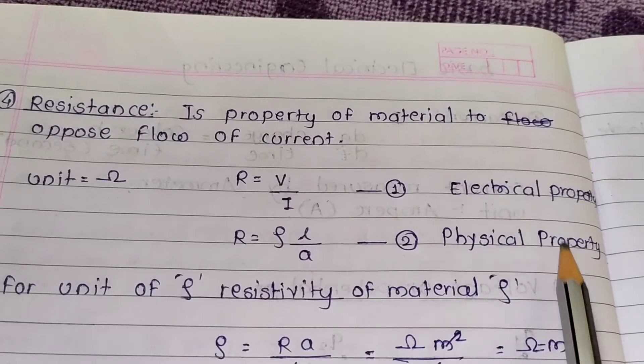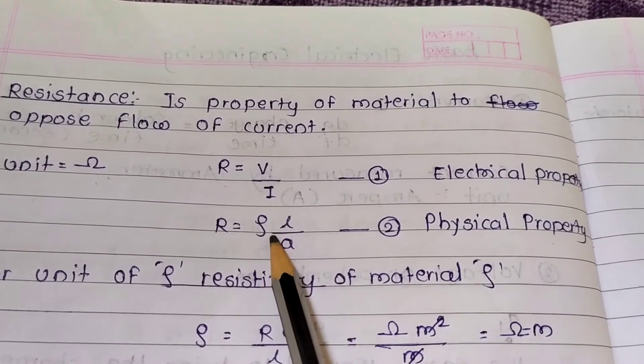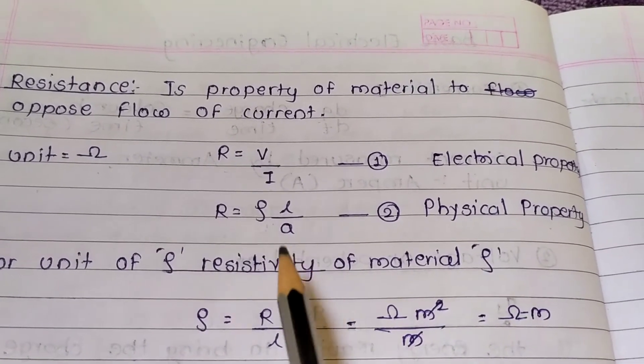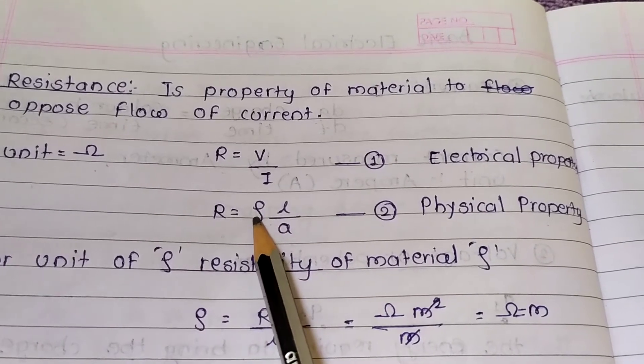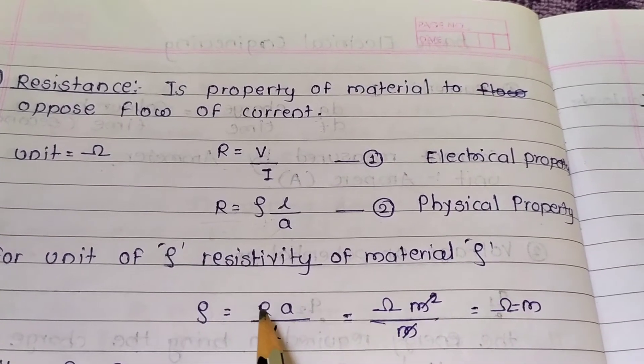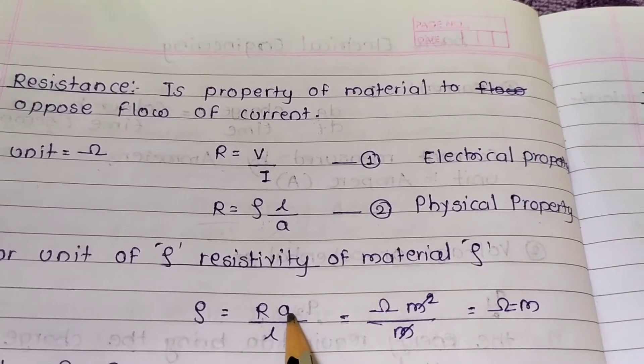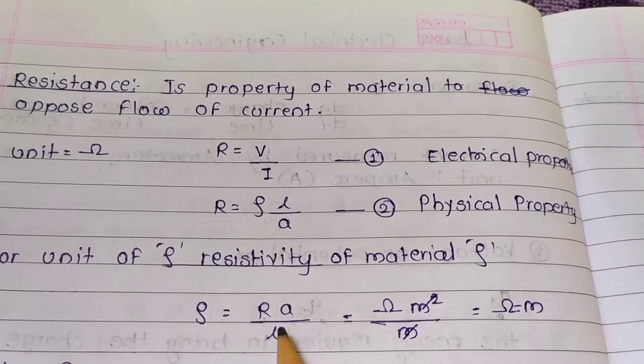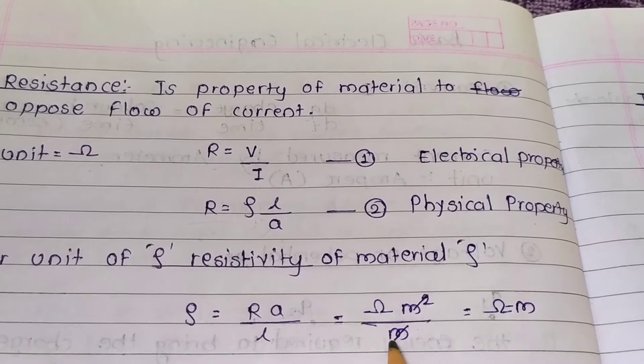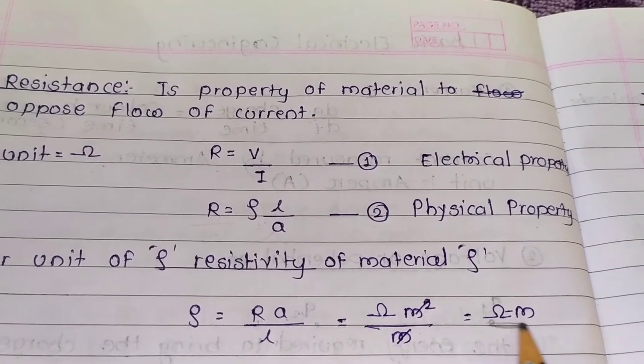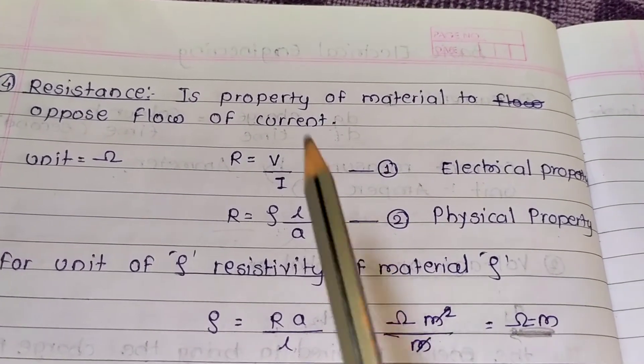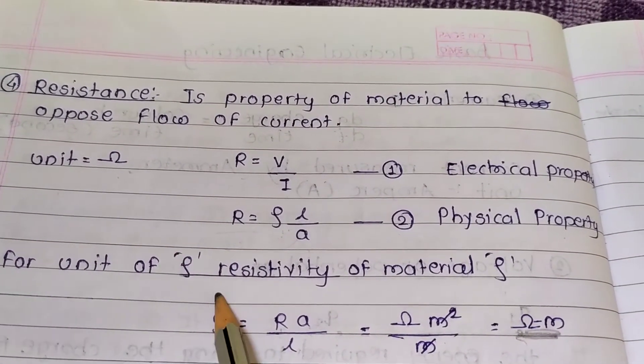ρ is resistivity of a material. For finding resistivity unit: ρ = R × A / L. R is ohm, A area is meter square, L is meter. Ohm meter square divided by meter equals ohm meter. Hence unit of resistivity is ohm meter and resistance is ohm.